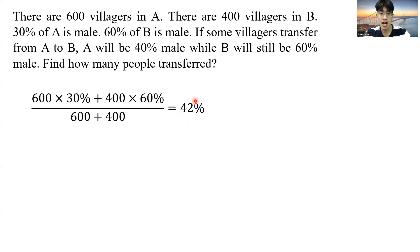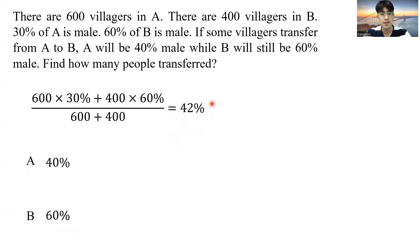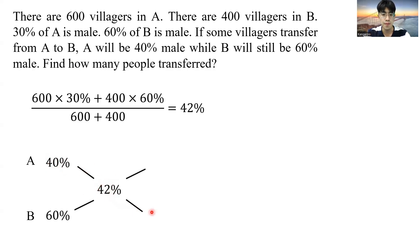After shifting some people from town A to town B, town A has 40% concentration and town B has 60% concentration, but the total concentration should still be 42%. From here, we can use the crossing method: the difference between 40 and 42 is 2, and the difference between 60 and 42 is 18, giving us a ratio of A to B of 9 to 1.